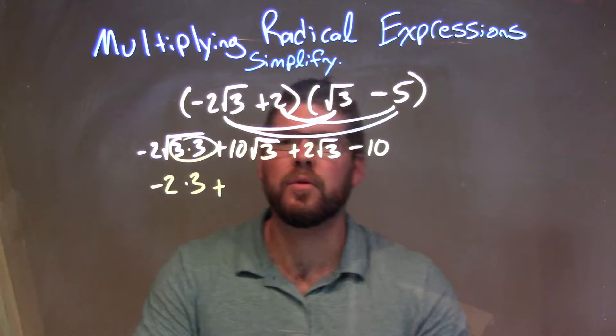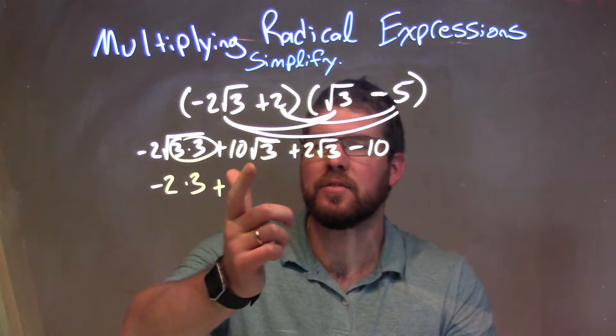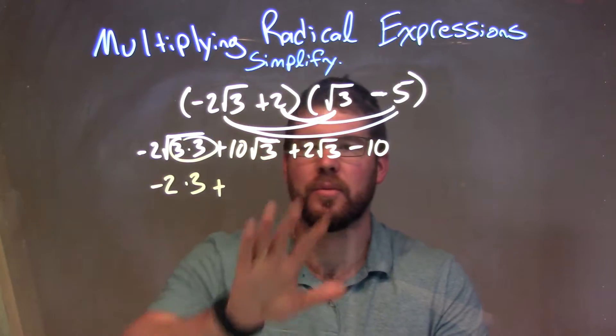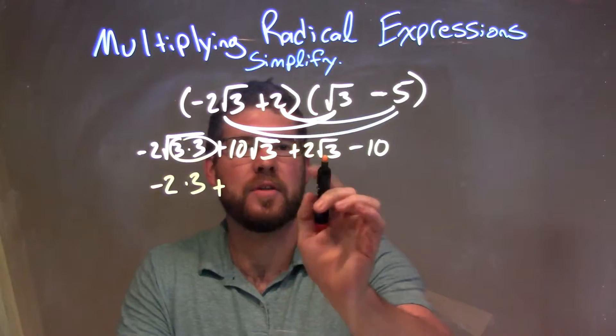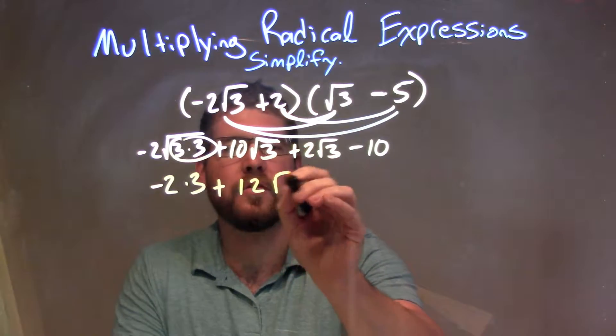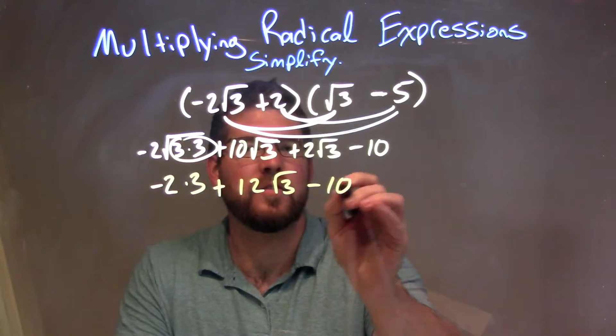Now, I have a square root of 3 and a square root of 3. I combine these two. I can combine those two to be one part here. So we look to the number out in front, the 10 and 2. So this becomes 12 square root of 3, and then we have a minus 10 right there.